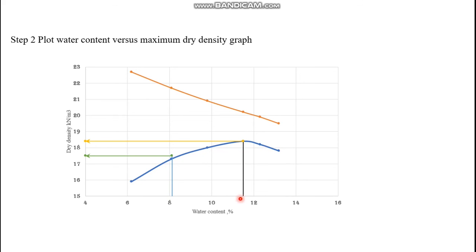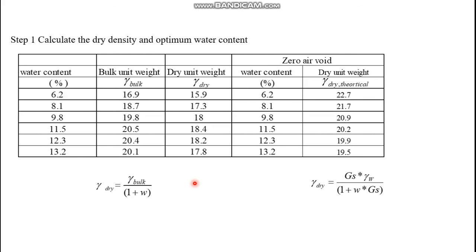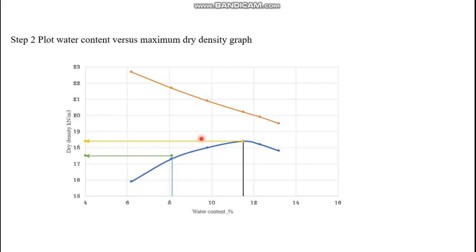The blue curve represents dry density versus water content. The peak dry density is approximately 18.4 kN/m³ and the optimum water content is about 11.5%. The orange line represents the zero air void curve. For 95% standard compaction: 95% of 18.4 is approximately 17.5 kN/m³, corresponding to a water content of about 8.1%.